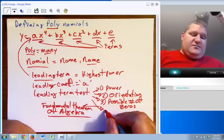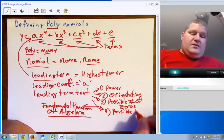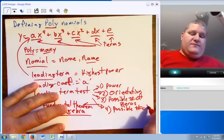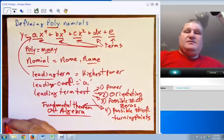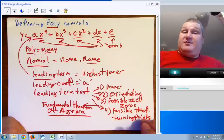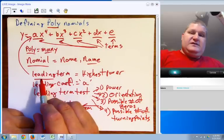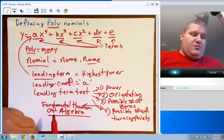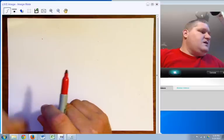Also, the leading term test gives you the possible number of turning points. Possible number of turning points, but again, it's only a possible number. It's not an exact number. We'll have to do a couple other things to determine that. But all of this is based off the leading term, which is the term with the highest power, leading coefficient, leading term test.